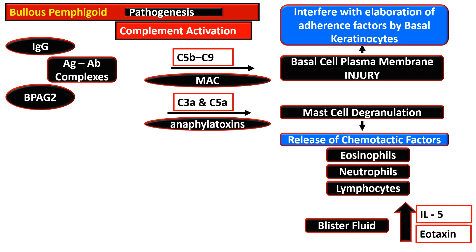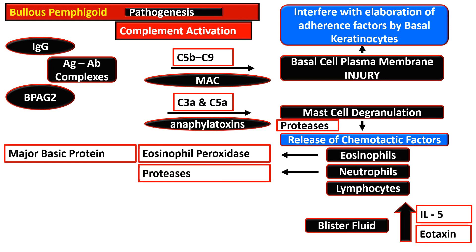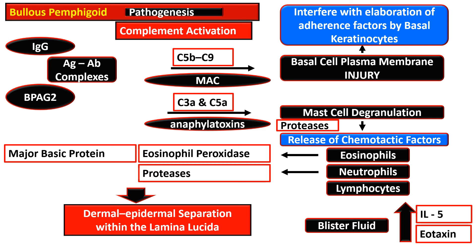The levels of interleukin-5 and eotaxins are increased in blister fluid. Eosinophils have eosinophilic peroxidases and major basic protein. Proteases are released from mast cells and neutrophils as well. All of these have tissue-damaging effects, resulting in dermal-epidermal separation within the lamina lucida.